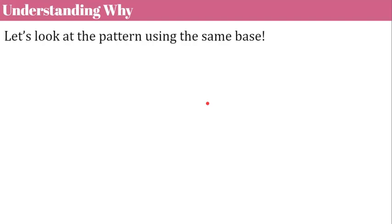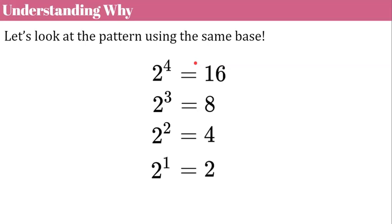Let's understand why this works and why it is. We're going to use a pattern using the same base. So I start with two. Two to the first is equal to two. Then we could do two squared: two times two is four. Two cubed is eight. Two to the fourth is sixteen. So let's look at the pattern that exists here.